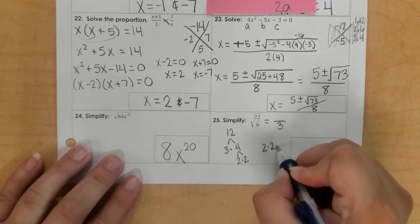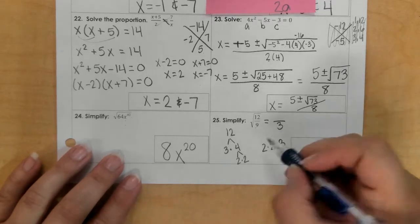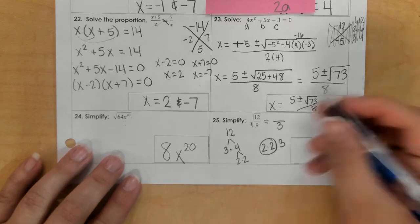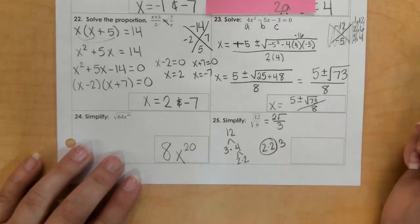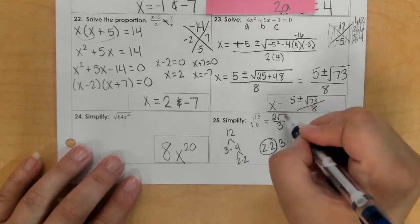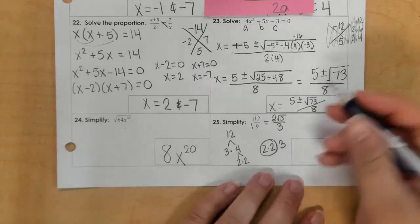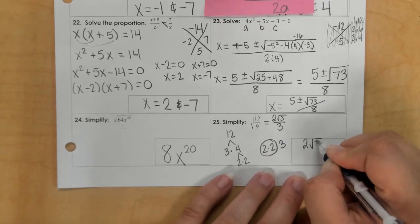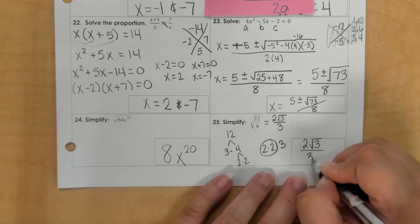So I have a 2, a 2, and a 3. So I have a pair of 2's that goes on the outside of the radical, and then the leftover 3 goes on the inside. So we have 2 square root 3 over 3.